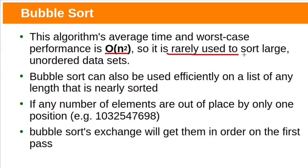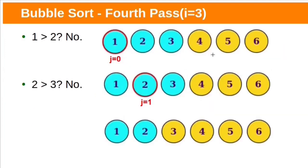Bubble sort's time complexity is O(n²), so it is rarely used to sort large data. However, it can be efficiently used if the data is nearly sorted — for example, if any number of elements are out of place by only one position, bubble sort will sort them in the first pass itself. In our previous example, after the third pass all blocks were already sorted, yet the algorithm still performed the fourth and fifth passes unnecessarily.